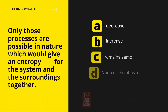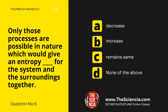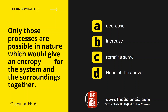Now let us check another question, that is question number 6. Only those processes are possible in nature which would give an entropy blank for the system and the surroundings together. The options are: Option A, decrease. Option B, increase. Option C, remains same. And Option D, none of the above.